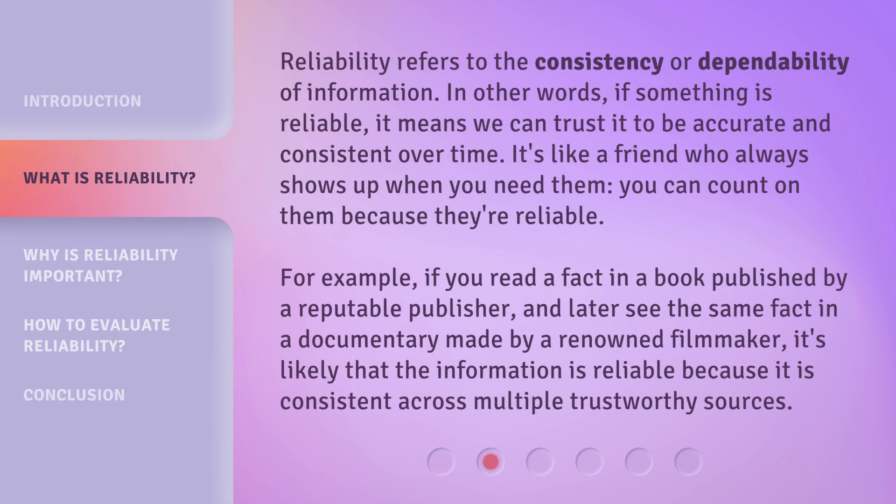Reliability refers to the consistency or dependability of information. In other words, if something is reliable, it means we can trust it to be accurate and consistent over time. It's like a friend who always shows up when you need them — you can count on them because they're reliable. For example, if you read a fact in a book published by a reputable publisher, and later see the same fact in a documentary made by a renowned filmmaker, it's likely that the information is reliable because it is consistent across multiple trustworthy sources.